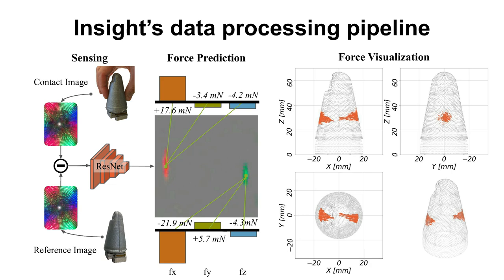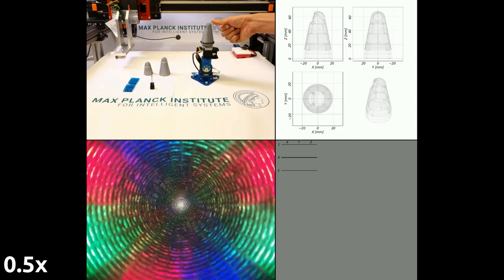Let's take a look at the sensor in action. When external contact occurs, deformations become visible in the raw camera image presented on the bottom left. On the bottom right, the output of the deep neural network is shown.